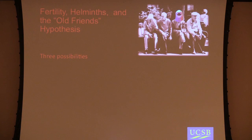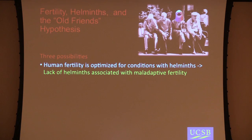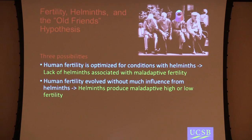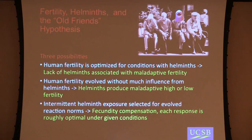Thinking about fertility, helminths, and the old friends hypothesis — there are really three possibilities. Maybe human fertility is optimized for conditions with helminths, if helminths were common throughout all of our history, and lack of helminths might be associated with maladaptive fertility, either high or low. Or human fertility might have evolved without much influence from helminths. What might be more likely is intermittent helminth exposure through much of human history selecting for reaction norms, in which case we might expect these responses to be somewhat optimal given the conditions. I don't have data to speak to this right now, but probably the last one is a little bit more likely.